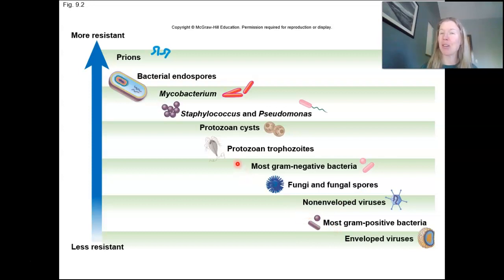And then we start moving down through here, different bacteria. Remember, cysts are going to be more difficult to kill than trophozoites, the vegetative form of a protozoan. Then we see gram negative bacteria, fungi, and fungal spores. Remember, fungal spores are just reproductive structures. They're not the same as an endospore.